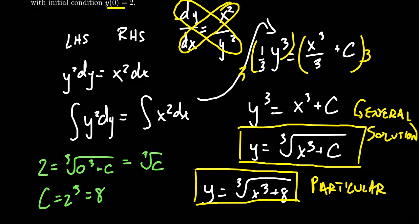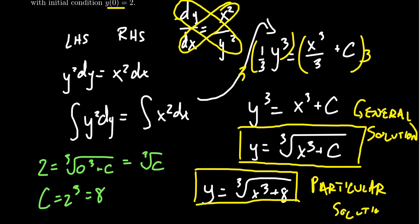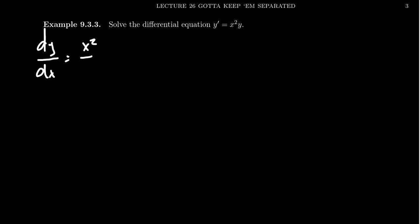Separation of variables works out really nicely in that example. Now let's take a look at another one: y prime equals x squared times y. This equation has the form dy over dx equals x squared times y. At first you might think this is not a separable differential equation because we don't have a function of x divided by a function of y. But if we have a product, this can be turned into a fraction — x squared over 1 over y — and so we can separate the variables.